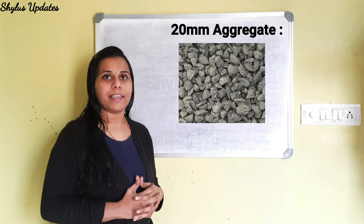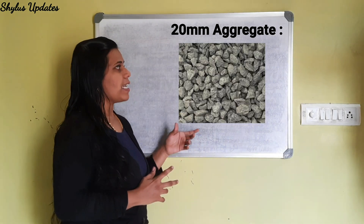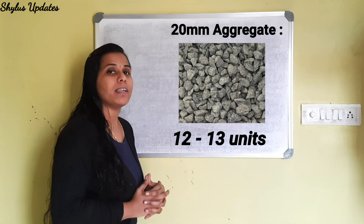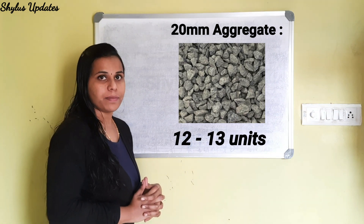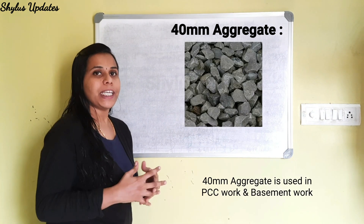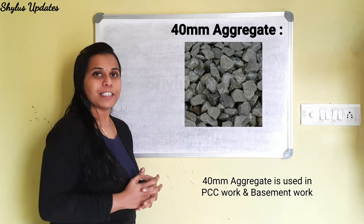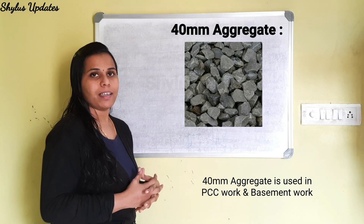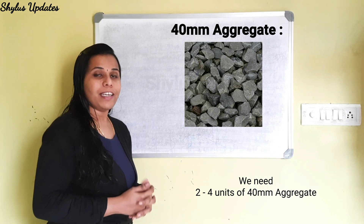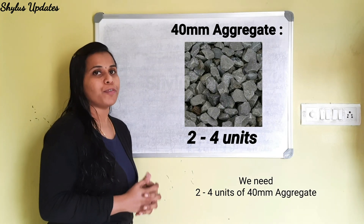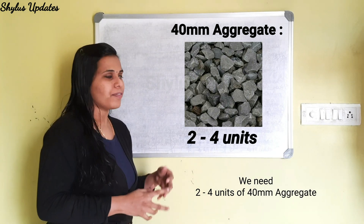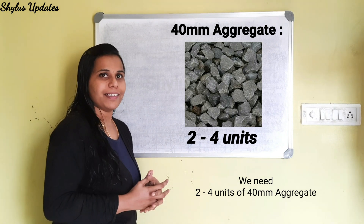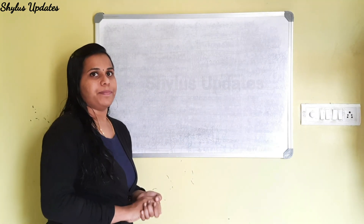For 20mm aggregate, we need 12 to 13 units. 40mm aggregate is used in PCC work and basement work. We need 2 to 4 units of 40mm aggregate.